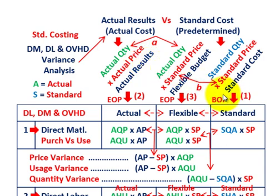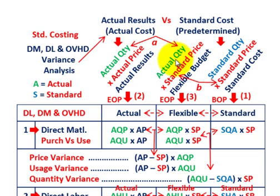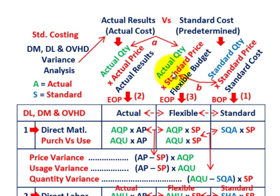Now knowing our standard amount and our actual amount, we can set up what they call the flexible amount or flexible budget. That's simply taking the actual quantity used from our actual results and multiplying it by the standard price from our standard costing. So actual quantity times standard price gives us our flexible budgeted amount, and that's where we come in with our variance analysis.